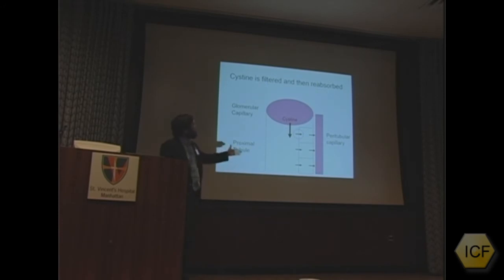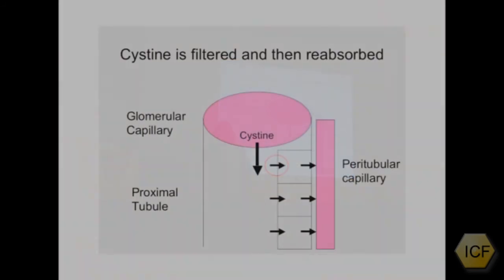Here's the nephron, and this purple circle is the glomerular capillary. Cystine is one of the amino acids in the blood, in the plasma, the liquid part of the blood, and the cystine is filtered into the proximal tubule.